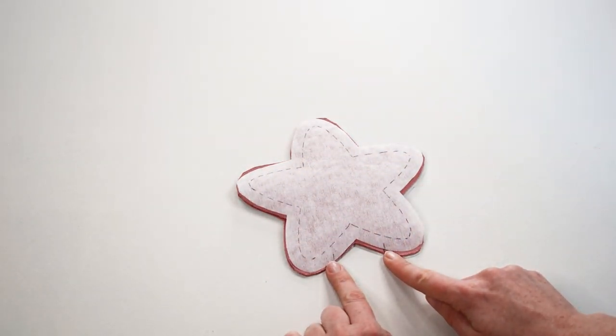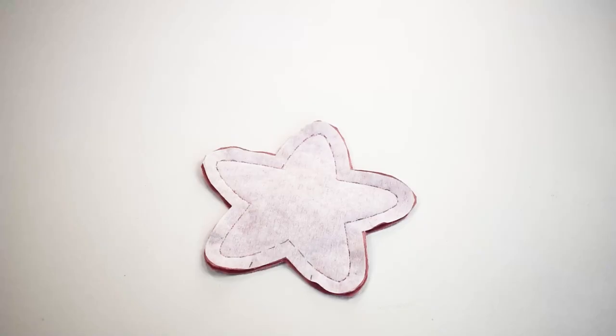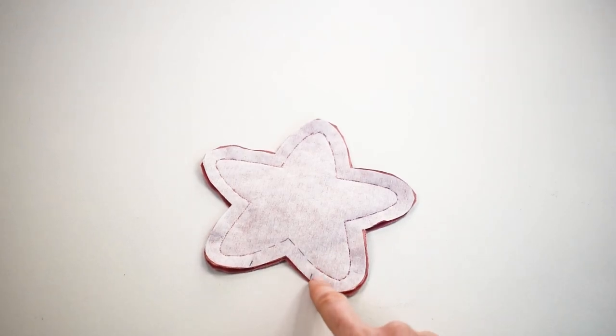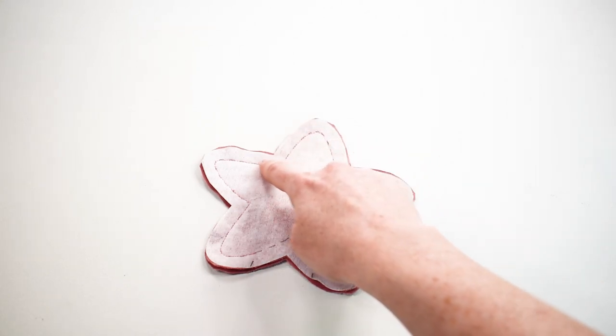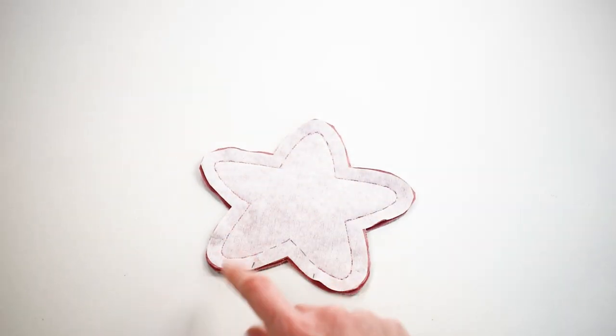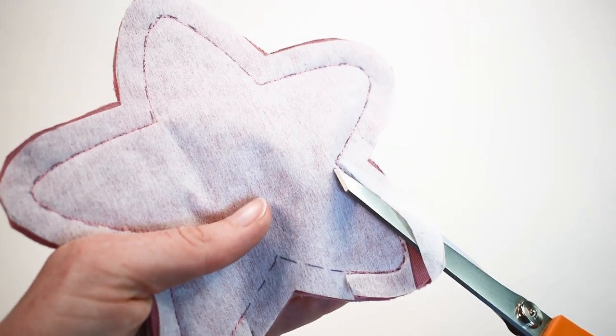You don't want to sew between these notches. Take your fabric scissors and cut along the interfacing on the outside of the seam you just stitched so that we can reduce the bulk around these seams. And we're going to repeat this on the other side.